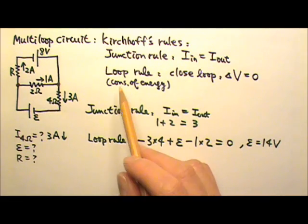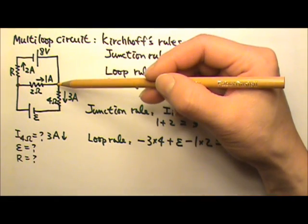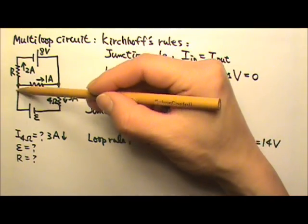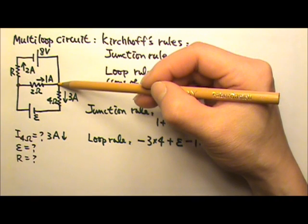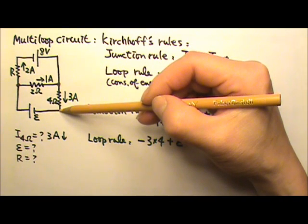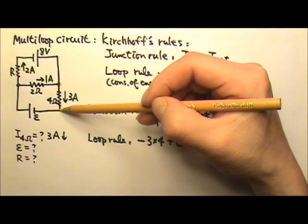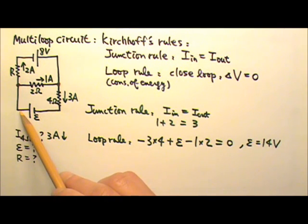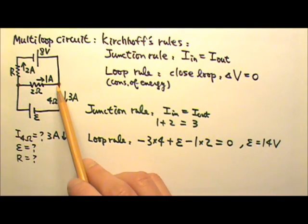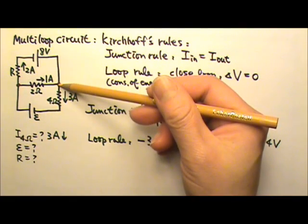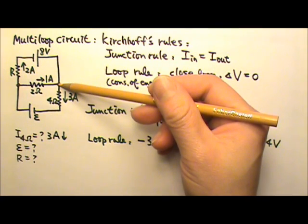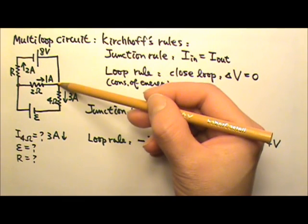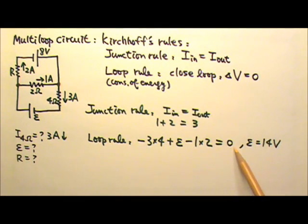The loop rule is consistent with conservation of energy. If we follow a positive charge through this loop, the charges first flow through a resistor and lose potential energy, then get pumped through the battery and gain potential energy, then lose potential energy again. By the time they return to the starting point, their potential energy is the same as the initial value. That's why the change in potential around a closed loop equals zero, and since U equals Q times V, if delta V is zero, then delta U is zero for the charges.